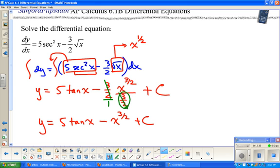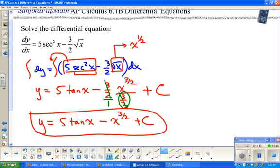So this just becomes minus x to the three halves plus c. Now if you feel the urge to write that x to the three halves as the square root of x to the third, that's fine. But that's good so far. Well, and that's it for solve the differential equation.